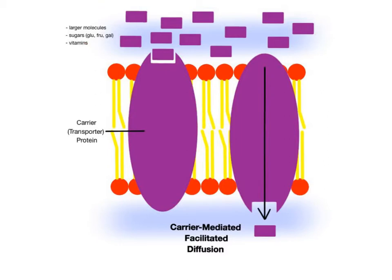This type of diffusion works when a solute, such as glucose, binds to a specific receptor site on a carrier protein and initiates a shape change. As the protein shape shifts, it pushes the glucose molecule into the cell from an area of high to low concentration.